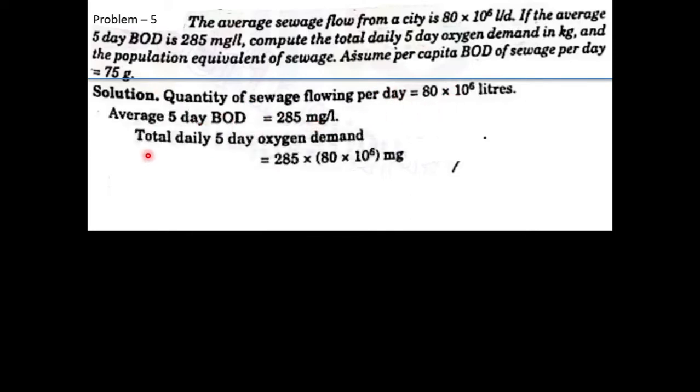Problem: The average wastewater flow from a city is 80 × 10^6 liters per day. If the average 5-day BOD is 285 milligrams per liter, compute the total daily 5-day oxygen demand in kilograms and the population equivalent. Assume per capita BOD of wastewater per day is 75 grams.